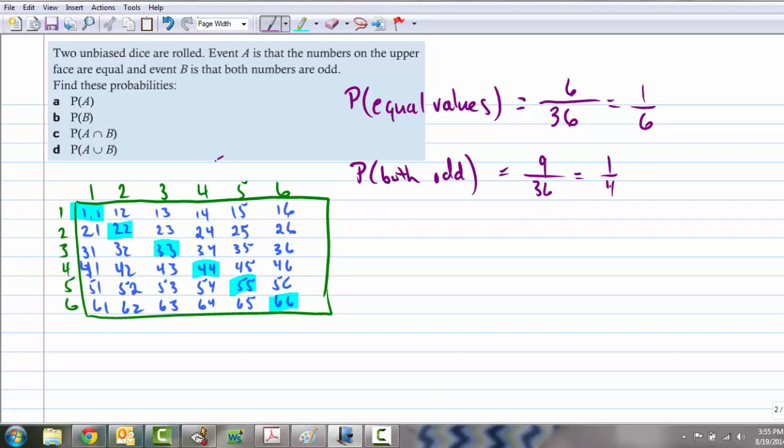Probability of A intersect B. This is the symbol for intersection. And the word that goes with that, with intersection, is and. So in other words, we want the probability that we have equal values and both odd. That is the intersection of these two. We want the things that fall into both of those groups. So of these highlighted ones, which ones are both odd? We've got one, two, three out of 36, or one-twelfth.